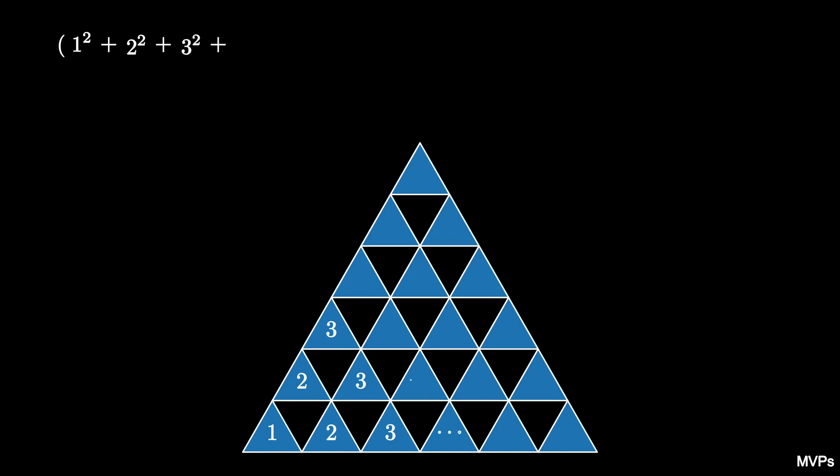Continue this process so that the n-1 tokens in each of the n-1 triangles in the next-to-last diagonal add n-1-squared tokens, and the n tokens in each of the n triangles in the last diagonal add n-squared tokens.